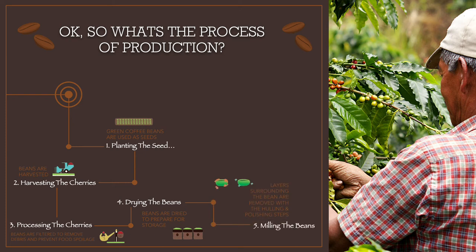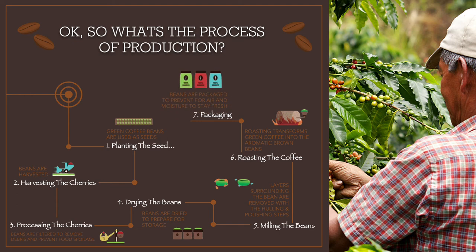Milling the beans: layers surrounding the beans are removed with the hulling and polishing steps. Roasting the coffee: roasting transforms the green coffee into the aromatic brown beans. Packaging: beans are packaged to prevent air and moisture from getting in, to keep them fresh.